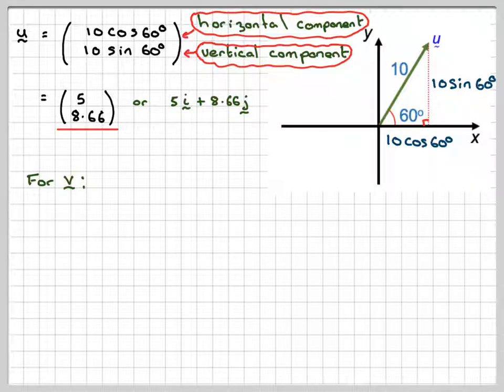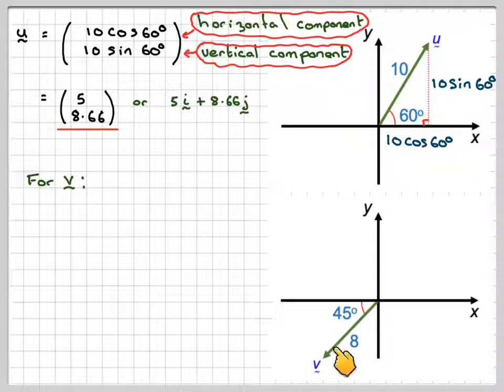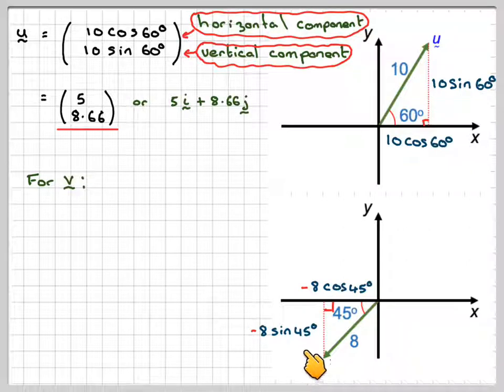For v, we do a similar sort of thing, but this one, the vector's in a different quadrant. So if this is the origin, then anything going this way is going to be negative, have a negative coordinate. So this will be 8 cos 45, but it'll be minus 8 cos 45, because it's to the left of the origin. And again, this is below the origin, the vertical component, so that will be minus 8 sine 45.